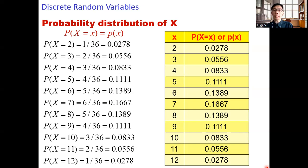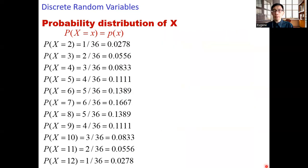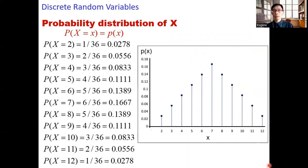For discrete random variables, instead of expressing the distribution as a table, we can express it as a graph. On the horizontal axis we have the value of the random variable, and the vertical axis corresponds to P(x), which is the probability. When X equals 2, the probability is 0.0278. When X equals 8, the corresponding probability is 0.1389.